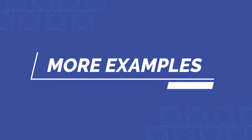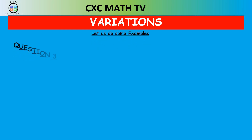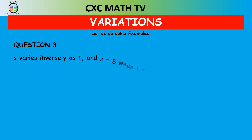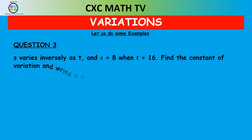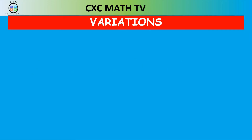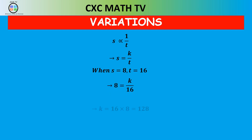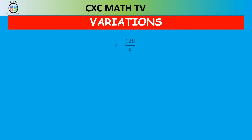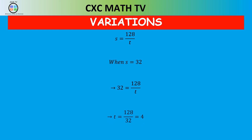Now let's do another example: s varies inversely as t, and s is 8 when t is 16. Find the constant of variation, write a direct variation equation relating s and t, then find t when s is 32. Since they're inversely proportional, s equals k over t. When s is 8 and t is 16, substituting and transposing gives k equals 128. So s equals 128 over t. When s is 32, transposing gives t equals 4.